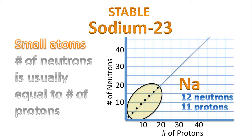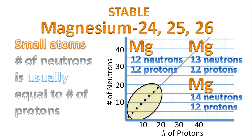Sodium-23, with 12 neutrons and 11 protons, is considered to be stable. But sodium-24, with an extra neutron, is considered to be unstable. I highlight the word 'usually' here, because as we can see, magnesium-24, 25, and magnesium-26 are all considered to be stable. So a general rule of thumb is: when the atom is small, the number of neutrons is usually equal to the number of protons, resulting in a stable nucleus. However, as we can see from magnesium, three different isotopes are all considered to be stable.